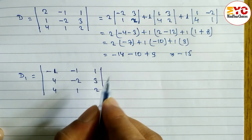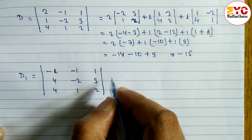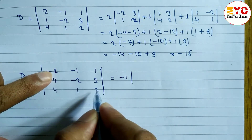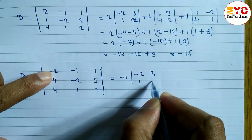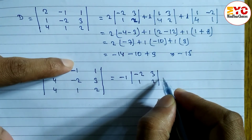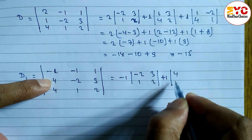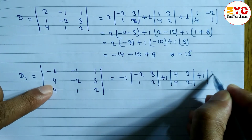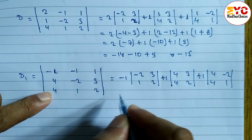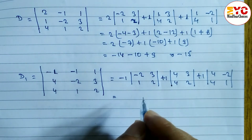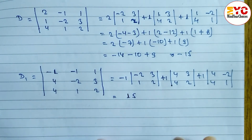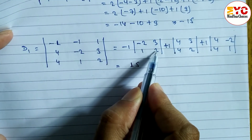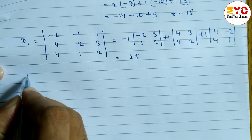We can use any method — row-wise, column-wise, or Sarrus's rule. Expanding: minus 1 and its minor is minus 2, 3, 1, 2. Then plus 1 and minor is 4, 3, 4, 2. Then plus 1 and minor is 4, minus 2, 4, 1. Solving this — find the main diagonal products — we get D1 equals 15.